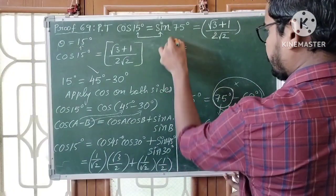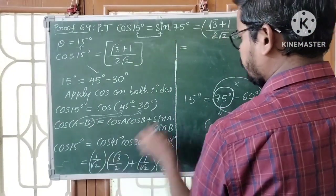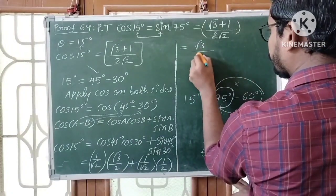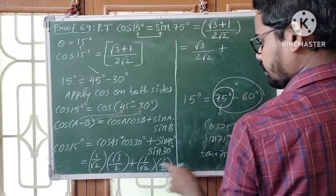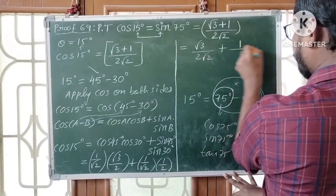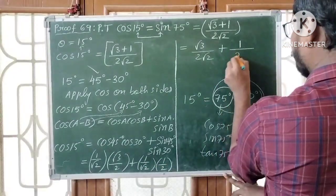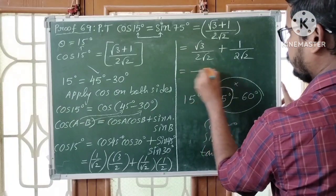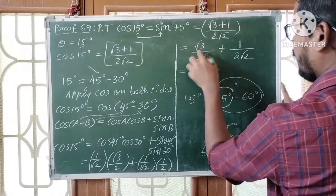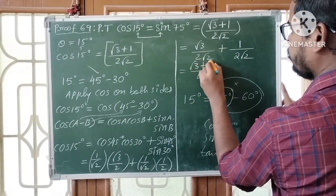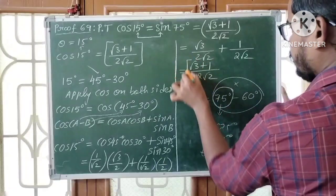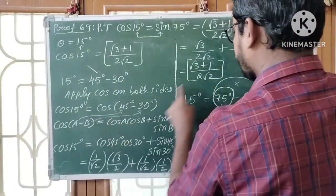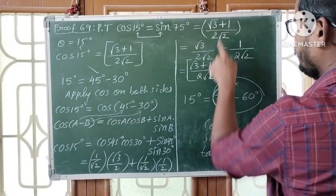Simplifying further: 1 by root 2 into root 3 by 2 gives root 3 by 2 root 2, and 1 by root 2 into 1 by 2 gives 1 by 2 root 2. Now the denominators are the same — common denominator is 2 root 2. Adding the numerators gives root 3 plus 1. Therefore, cos 15 degrees is equal to root 3 plus 1 by 2 root 2.